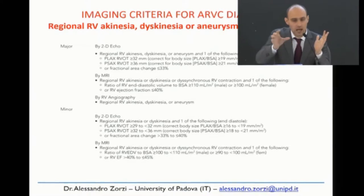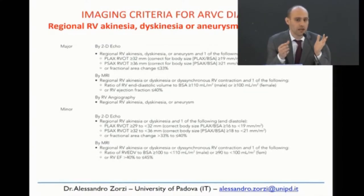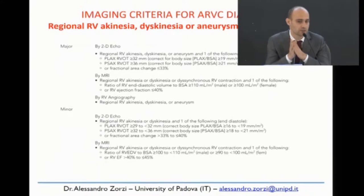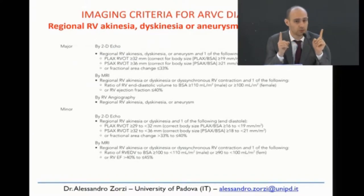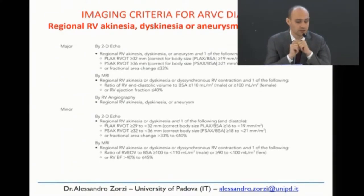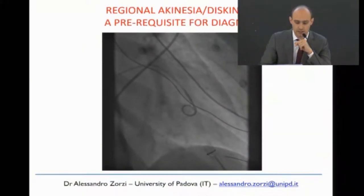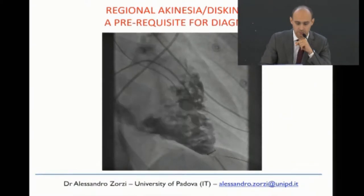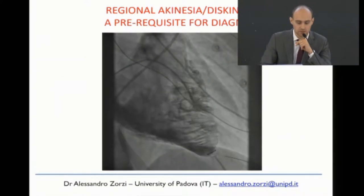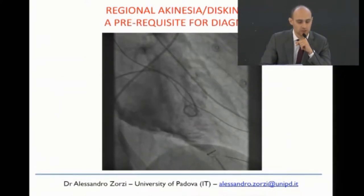For imaging diagnosis of ARVC, two features are required. First, regional right ventricular wall motion abnormalities — because fibro-fatty replacement involves certain areas of the right ventricle, so for example the apex may not contract while the rest does, producing regional akinesia, dyskinesia, or aneurysm. Hypokinesia alone is not sufficient due to low specificity. Second, you also need global dilation or dysfunction — both elements together are required for a diagnosis of arrhythmogenic cardiomyopathy.